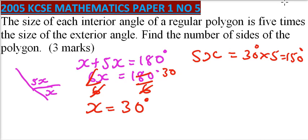So the interior angle is 150. And we know that the exterior angle is the same as the angle at the center. So we divide 360 degrees by 30.